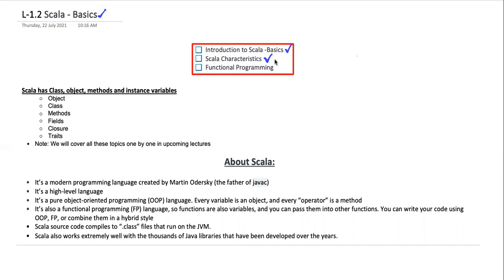I'll also discuss the Scala characteristics and functional programming. This third point is very important because you can see this everywhere in the documents — why Scala is a functional programming language. So you will also look into this aspect: why it is called a functional programming language.